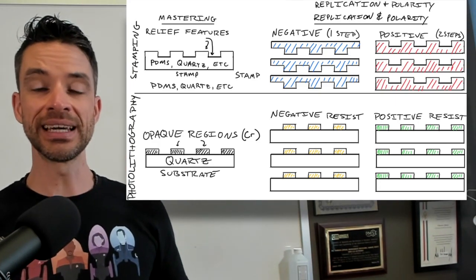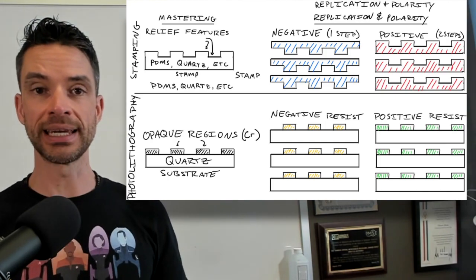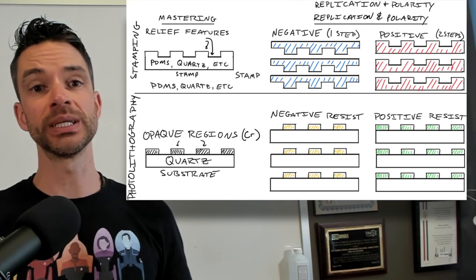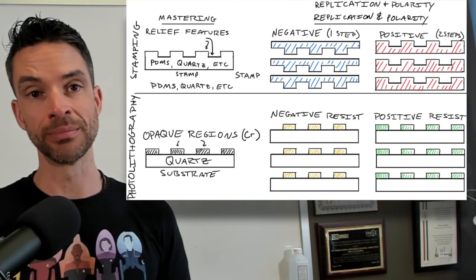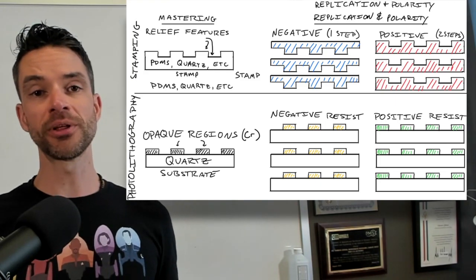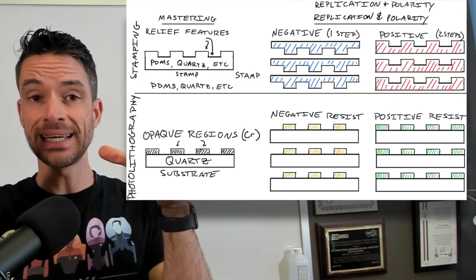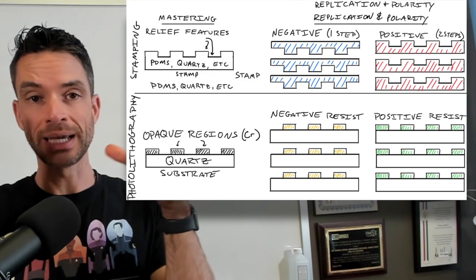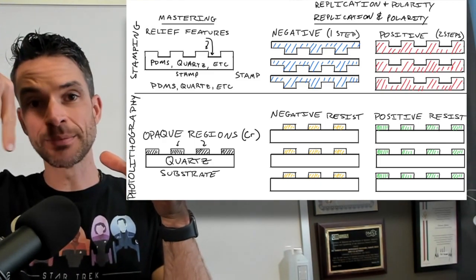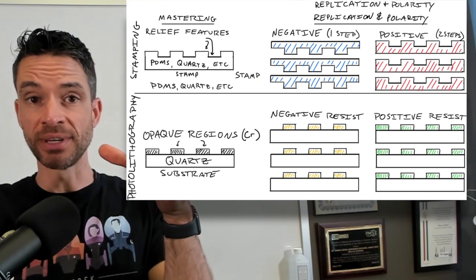Photolithography is a technique that is used for replicating information that was first created using electron beam lithography. And in photolithography, you take this mask, which is made again by e-beam lithography by etching some patterns into a resist film.